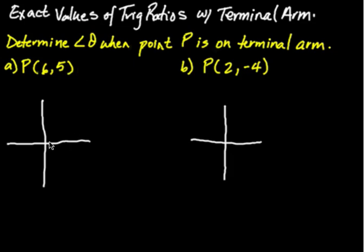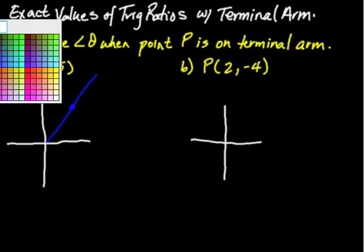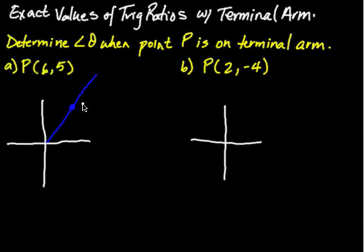The goal is to place it fairly accurately in the correct quadrant. My P goes over 6 up 5, so probably about there. That means my terminal arm goes up like this. I'm looking for the angle that goes from the standard position to that terminal arm. I can see that angle is going to be between 0 and 90 degrees.